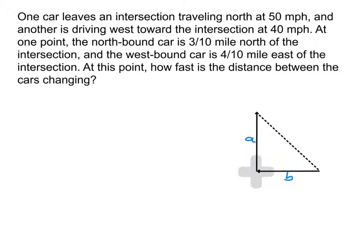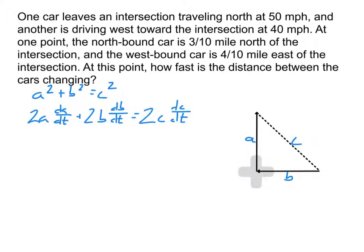We use the Pythagorean theorem, just like the ladder problem. I'll label the sides a and b — I considered using N and W for north and west, but the westbound car is actually to the east heading toward the intersection, so I stuck with a and b. Taking the derivative of the Pythagorean theorem gives us our related rates equation. You can divide every term by 2 to simplify things.